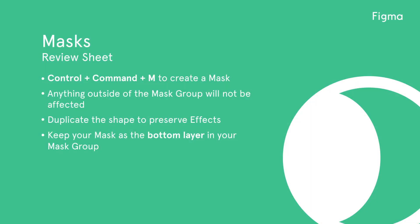Let's review what we've learned. Use Control, Command, M to quickly create a mask. Anything outside of the mask group will not be affected. Duplicate those shapes to preserve effects. Keep your mask as the bottom layer in your mask group.